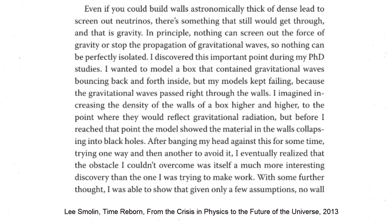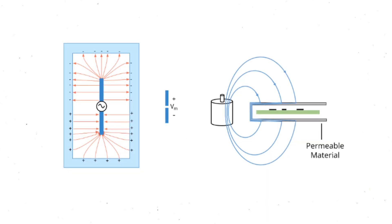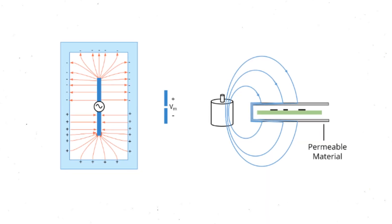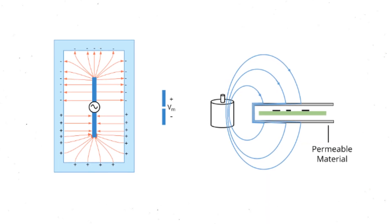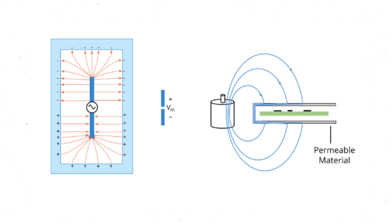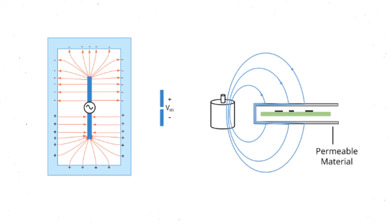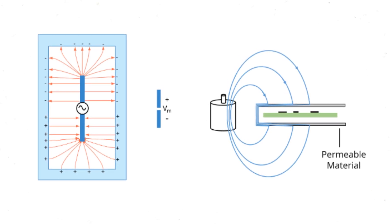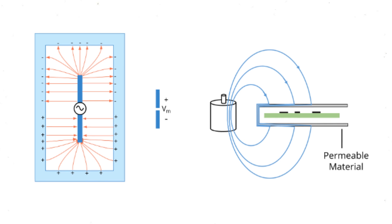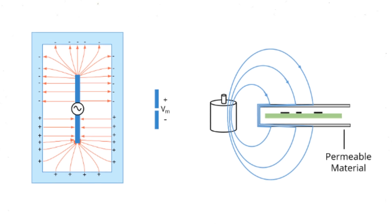Smolin made the assumption that no negative masses or energies could exist. This is important, since electromagnetic shielding is possible thanks to the existence of positive and negative charges. Gravity, on the other side, is always attractive.